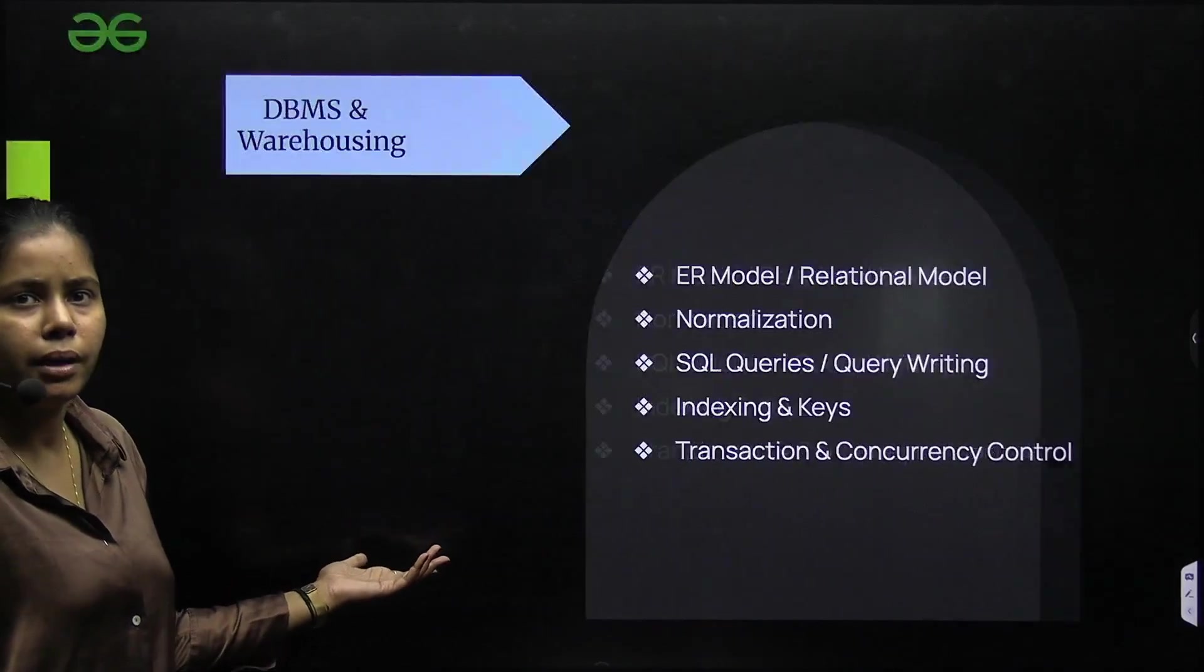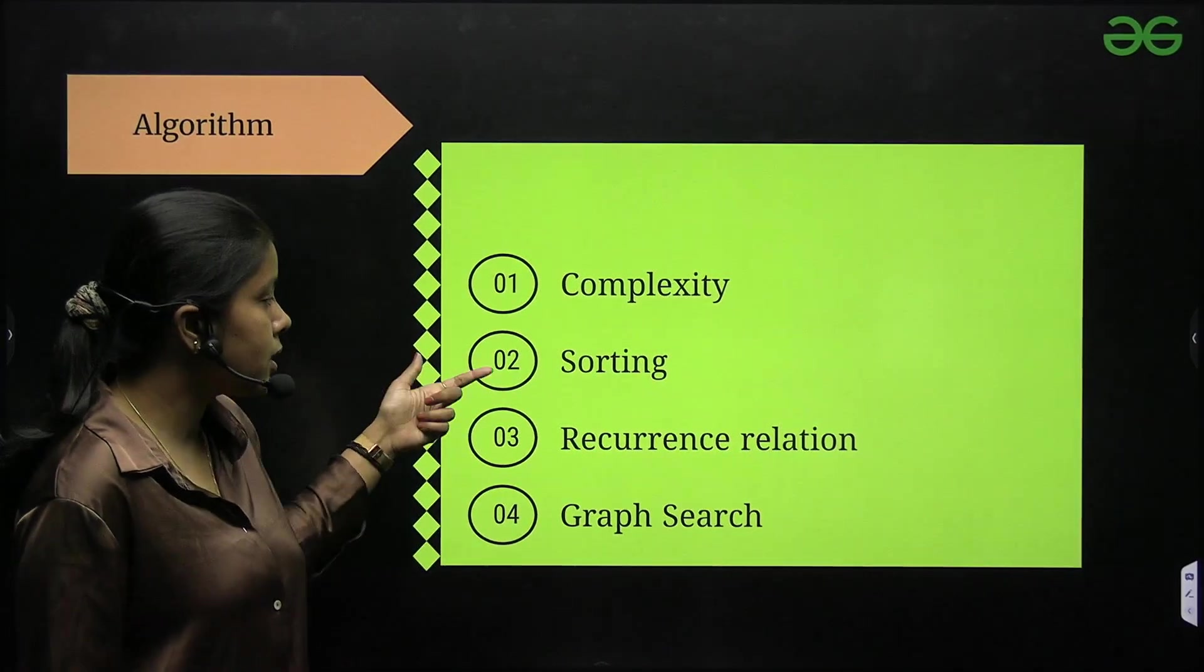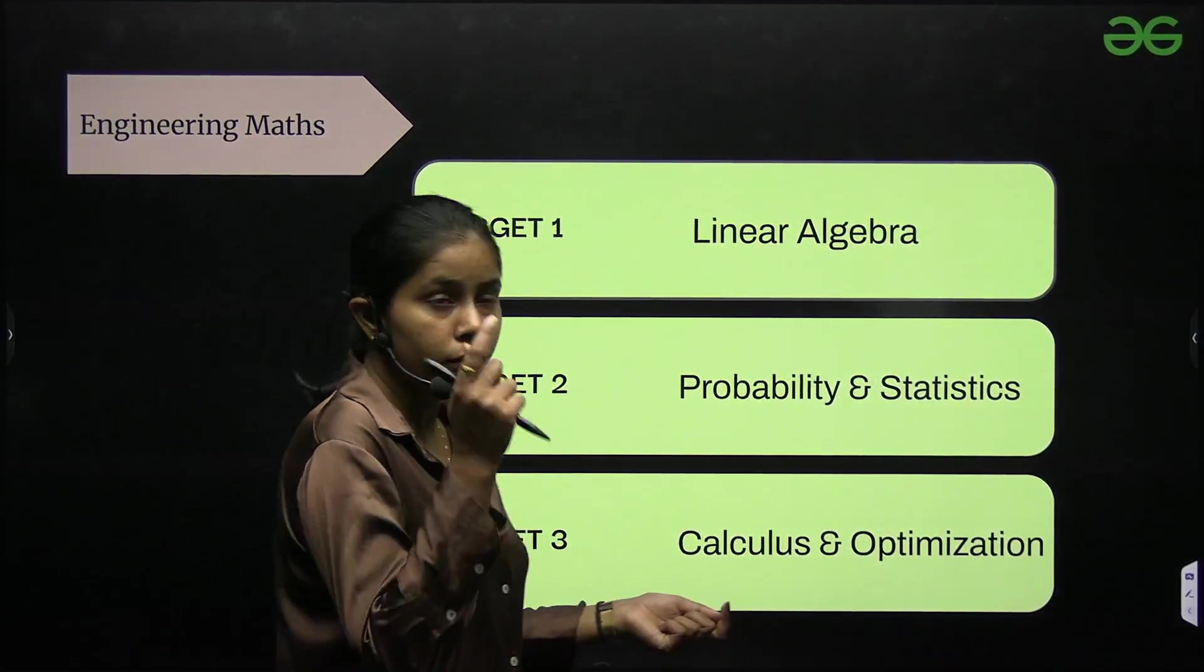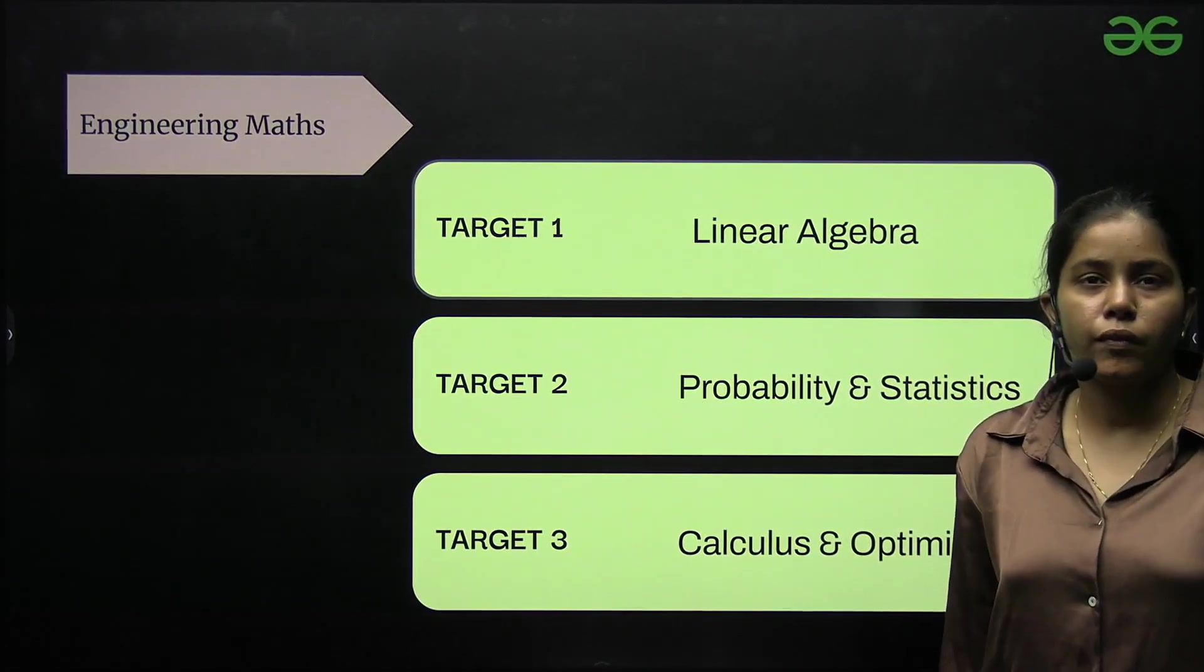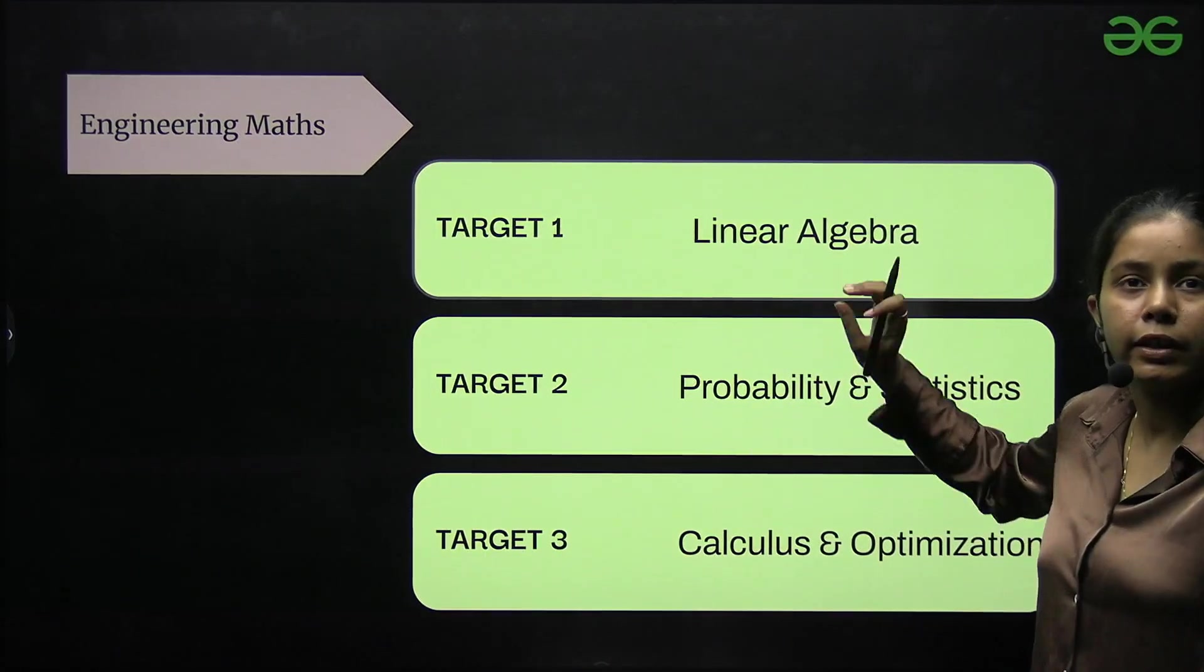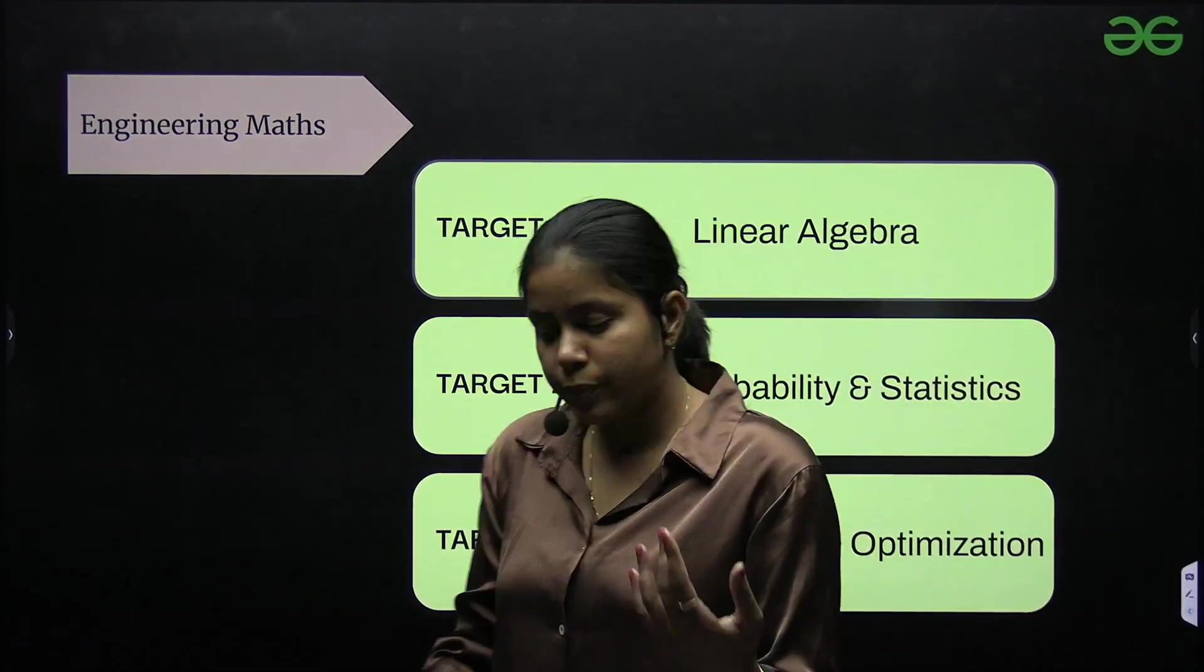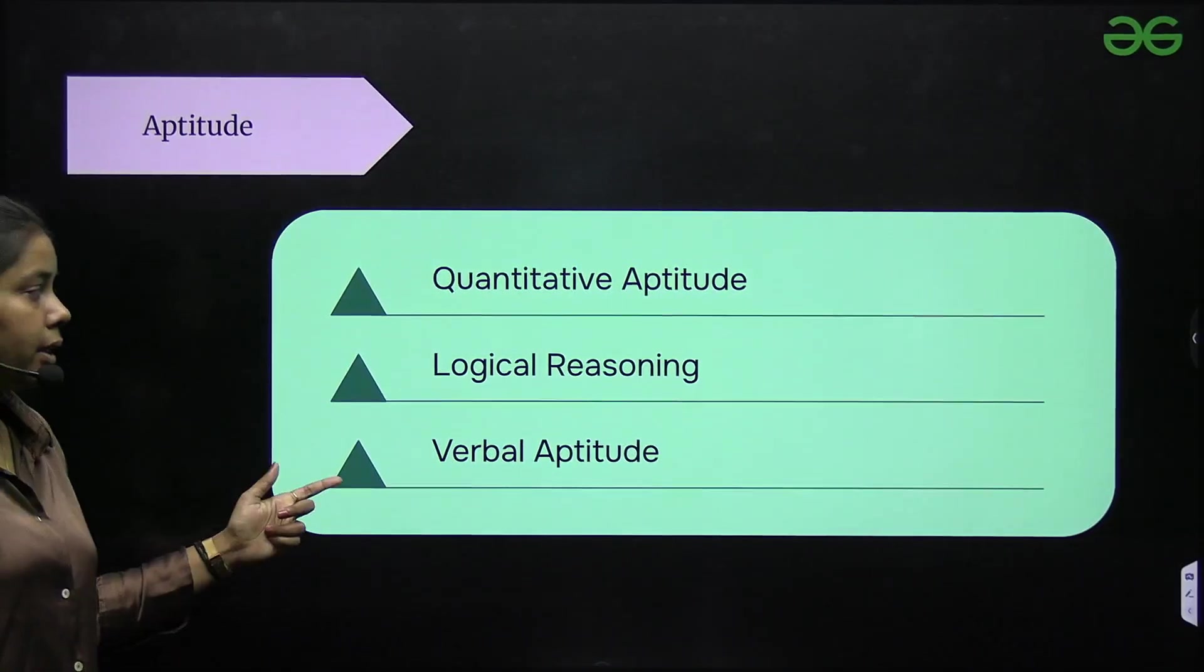Then we have algorithm: complexity sorting, recurrence relation, and graph search. These are the topics. And if I talk about engineering mathematics, if I calculate total of these mathematics and aptitude, it would consist of around 55 marks, around 55 marks. So this has high weightage. And if I add aptitude as well, make sure you go through all the concepts of linear algebra, probability statistics, calculus, and practice questions based on that as well. For aptitude we have quantitative aptitude, logical reasoning, and verbal aptitude.